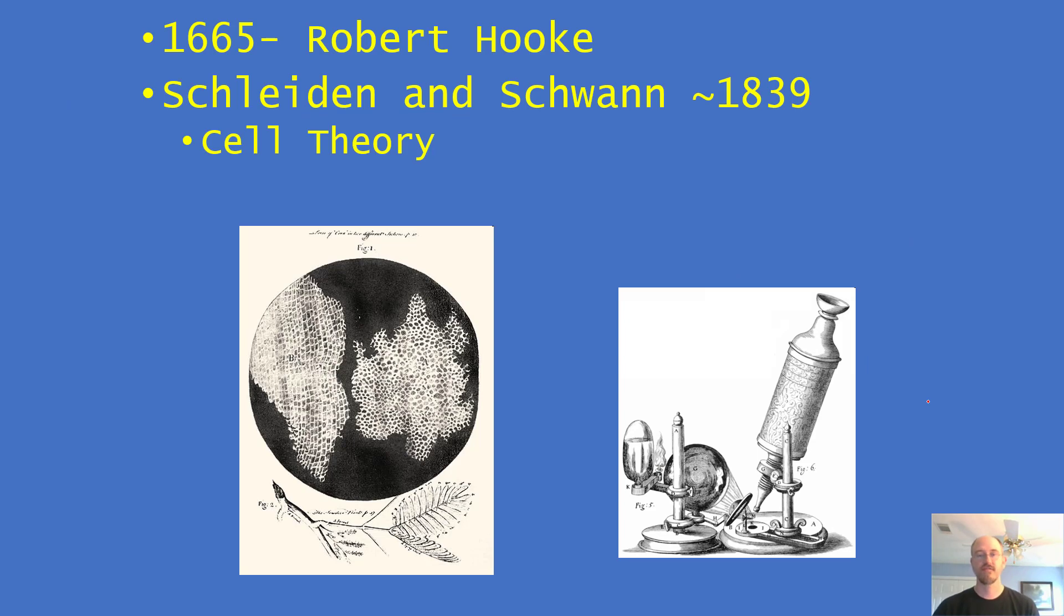Now cells were first discovered around 1665 by a guy named Robert Hooke. He looked at cork like from a wine cork. And he saw these structures that looked like rooms. Notice these look like little square rooms. And he called them cells because they looked like a cell, like a little room, like a monk would live in or a jail cell.